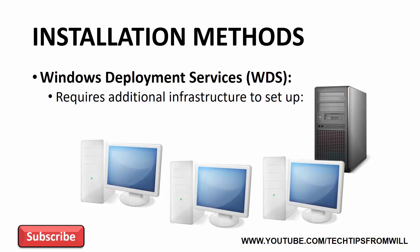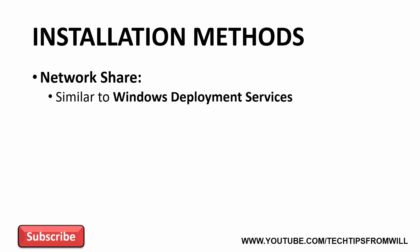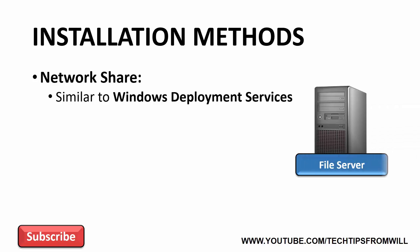Considering the investment in infrastructure required, Windows Deployment Services is often found in larger environments that have a lot of computers. The last install method I'll look at is Network Share. Installing Windows 10 using a Network Share is, in many ways, similar to Windows Deployment Services. With a Network Share, all you need is a file server with a shared folder. This shared folder is where the Windows 10 installation files are located.